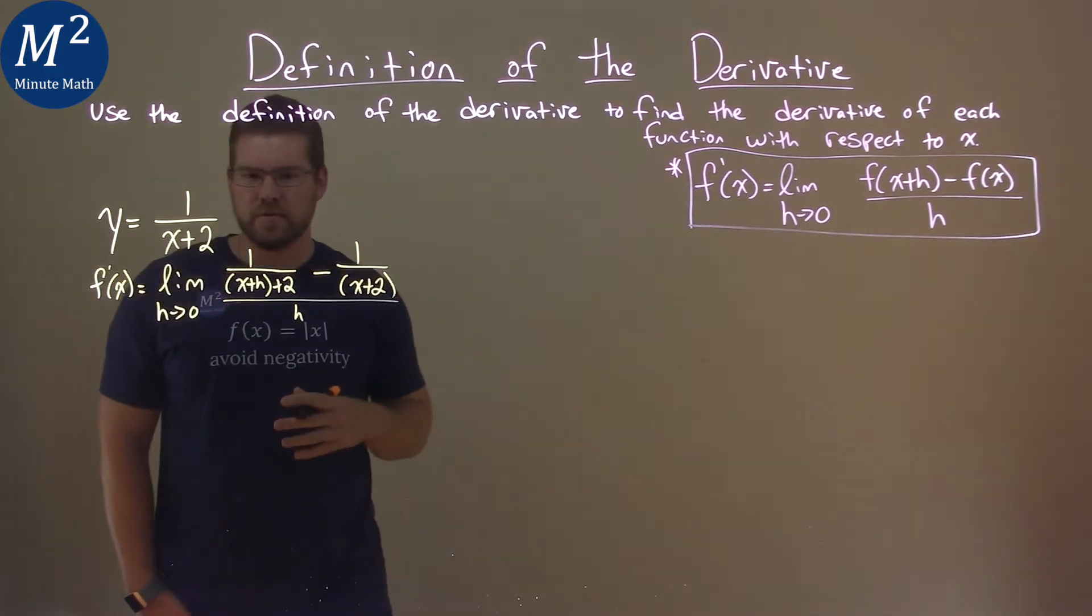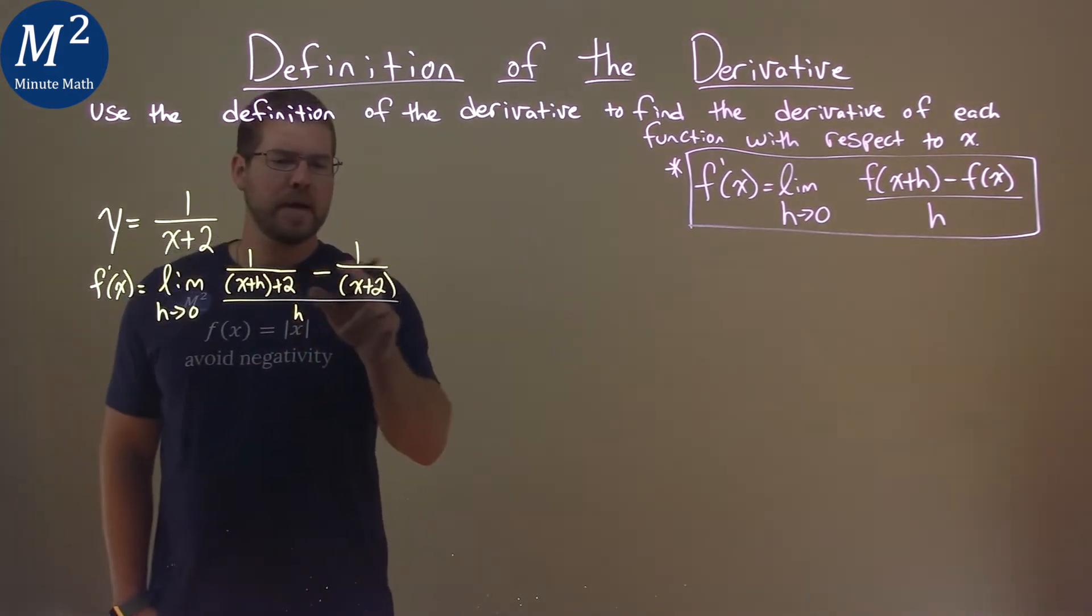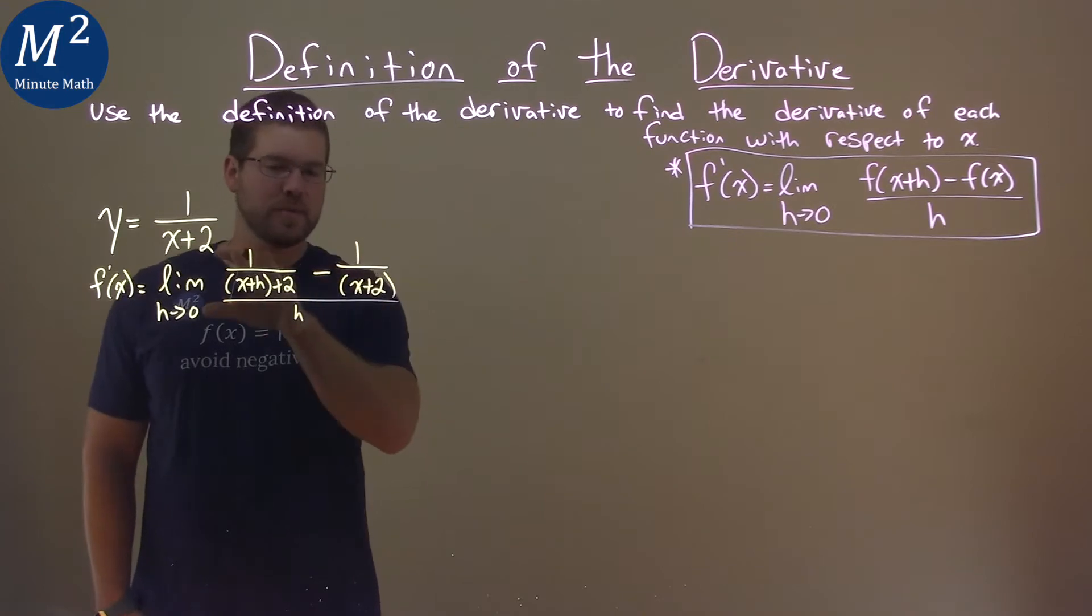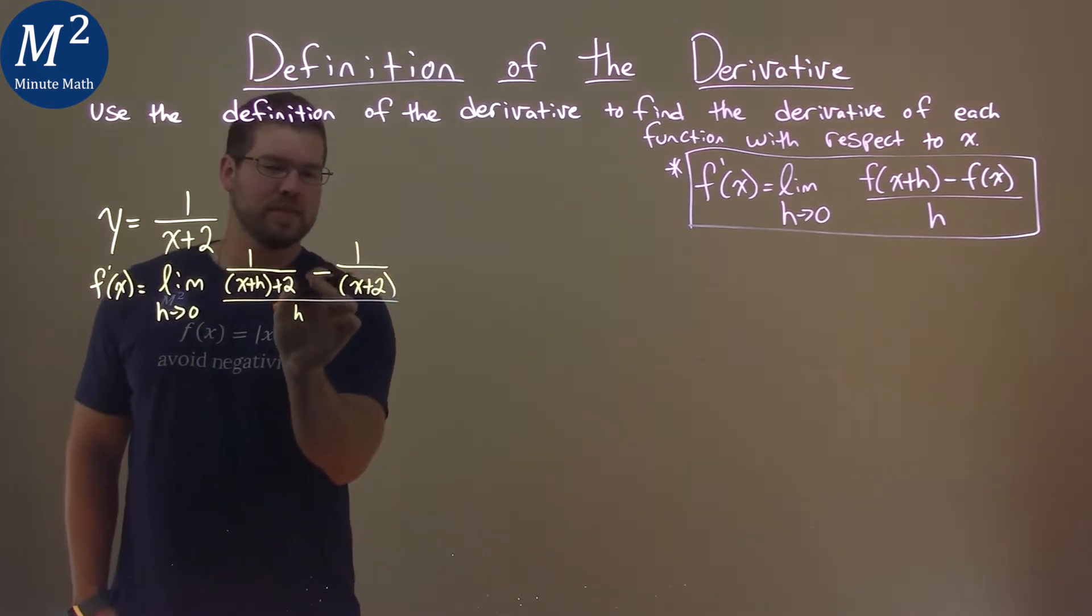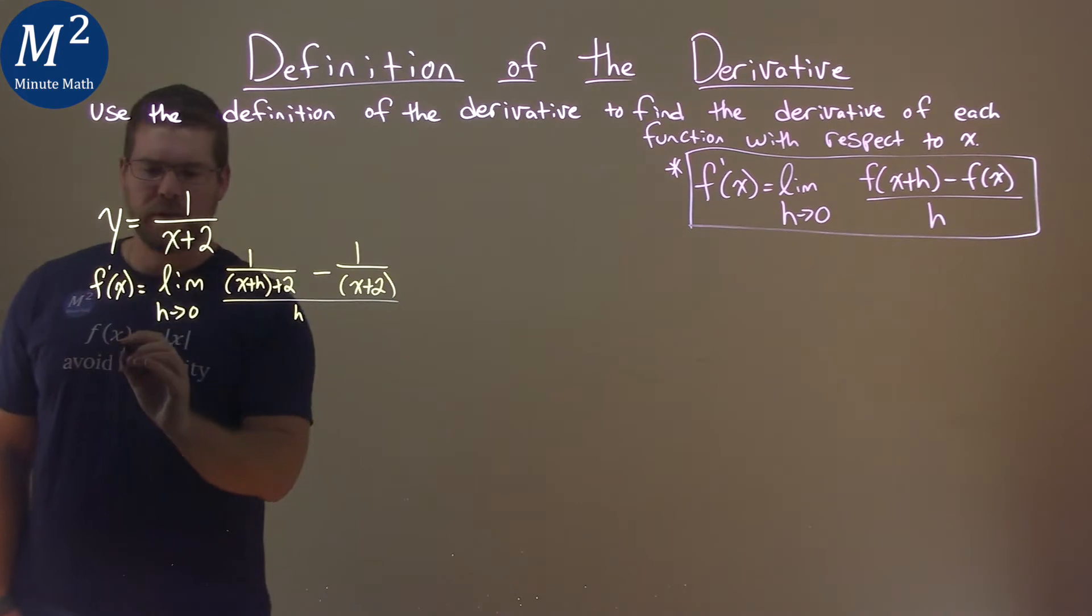Now this gets to be a little tricky here, so where do we go with that? Well, I'm going to try to combine this numerator to be kind of like one fraction. It's like two parts we're subtracting here, let's bring together like terms.